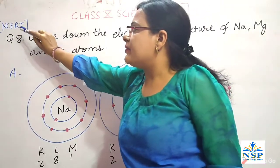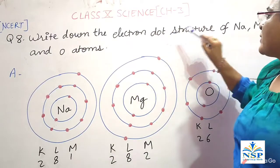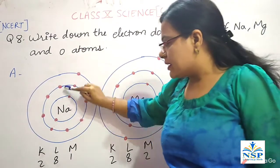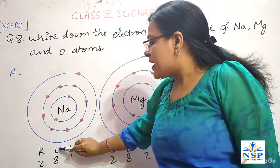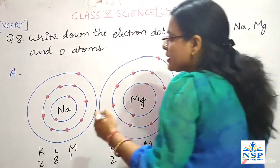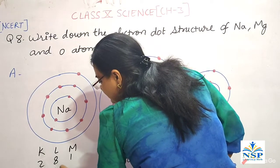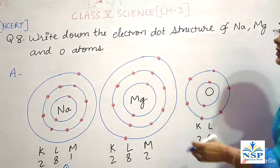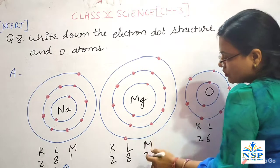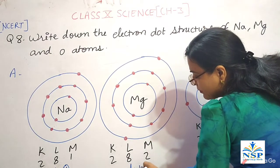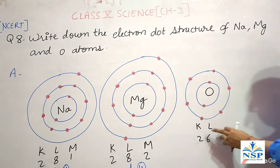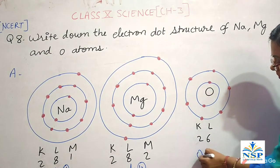Question number 8: write down the electron dot structure of sodium, magnesium, and oxygen atom. The electron dot structure of sodium: K shell has 2 electrons, L shell has 8 electrons, and M shell has 1 electron, because the atomic number of sodium is 11. For magnesium: K shell has 2 electrons, L shell has 8 electrons, and M shell has 2 electrons, because its atomic number is 12. For oxygen: K shell has 2 electrons and L shell has 6 electrons, because its atomic number is 8.